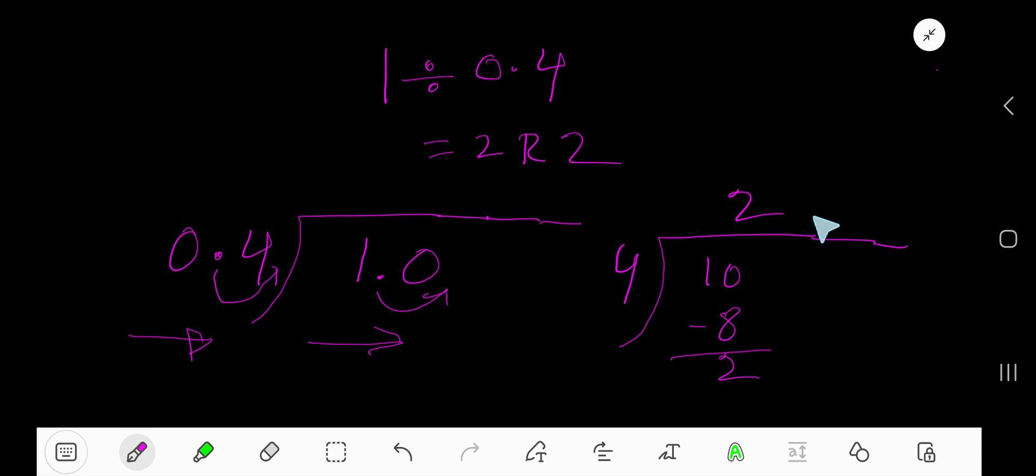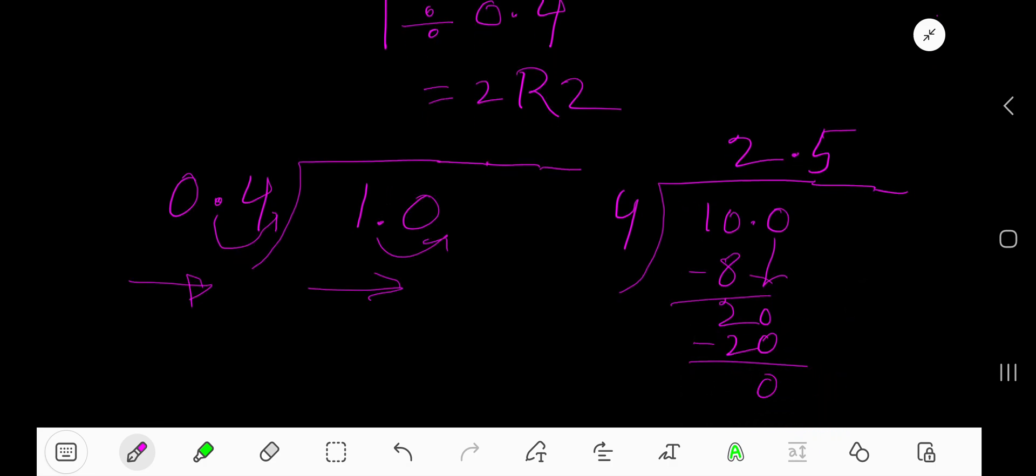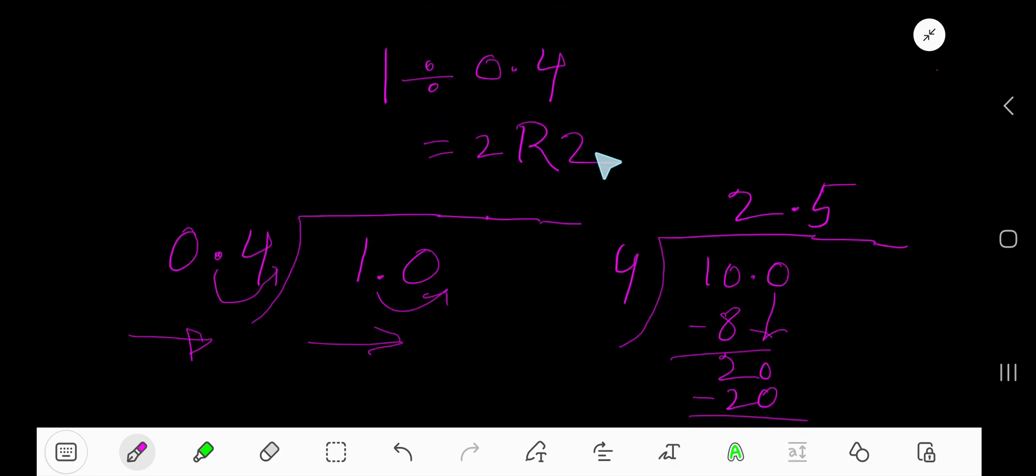If I continue this process, then I will take the decimal, then 0. Bring down this 0, and the decimal must come to the quotient. So 4 goes into 20 how many times? 5 times. 5 times 4 is 20. If I subtract, then I will get 0. That is, our answer is 2 remainder 2, or 2.5.